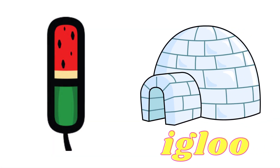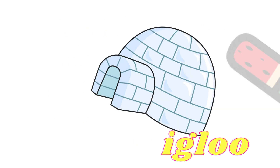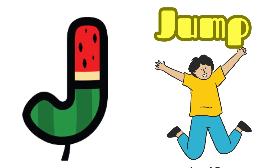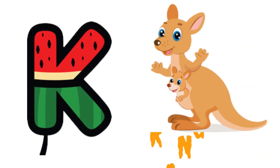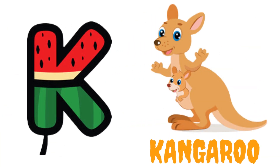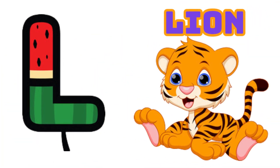I is for Igloo, I-I-Igloo. J is for Jump, J-J-Jump. K is for Kangaroo, K-K-Kangaroo. L is for Lion, L-L-Lion.